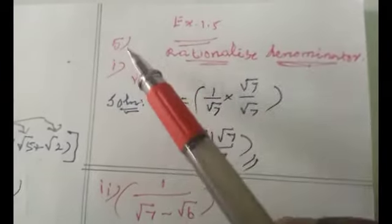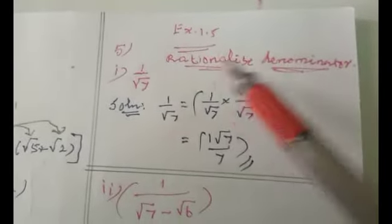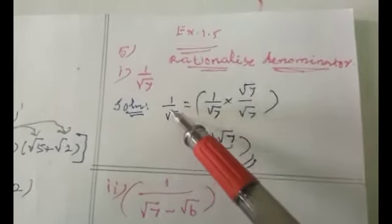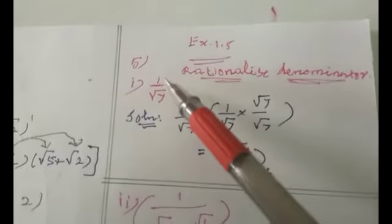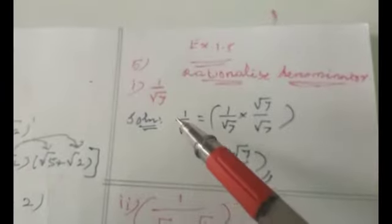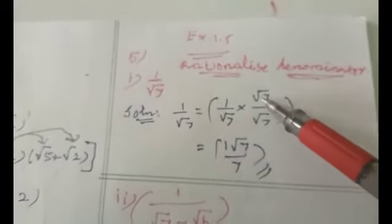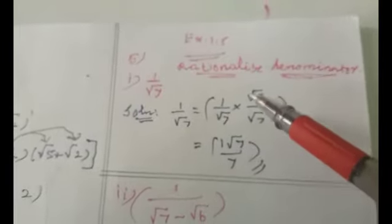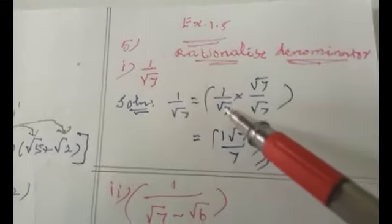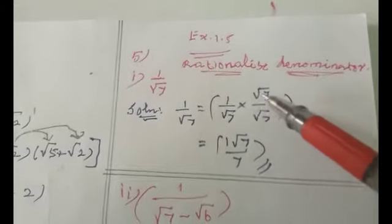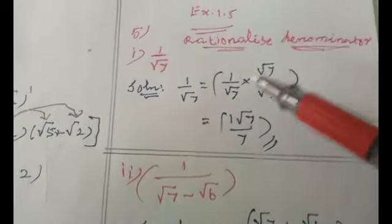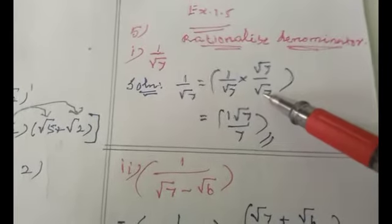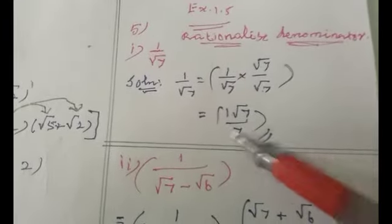Section 1.5, Roman numeral 5: we have to rationalize the denominator. Rationalizing the denominator means removing square root numbers from the denominator. First subdivision: 1/√7. To rationalize, multiply both numerator and denominator by √7/√7. This gives (1 × √7)/(√7 × √7) = √7/7. The denominator no longer has a root number.